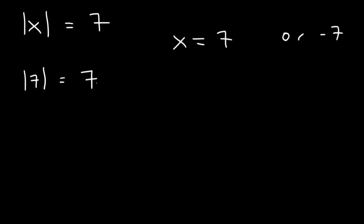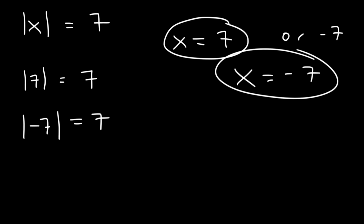The absolute value of 7 is 7, so this works. The absolute value of negative 7 is also 7, so x can be 7 or negative 7. Both will make the equation true.